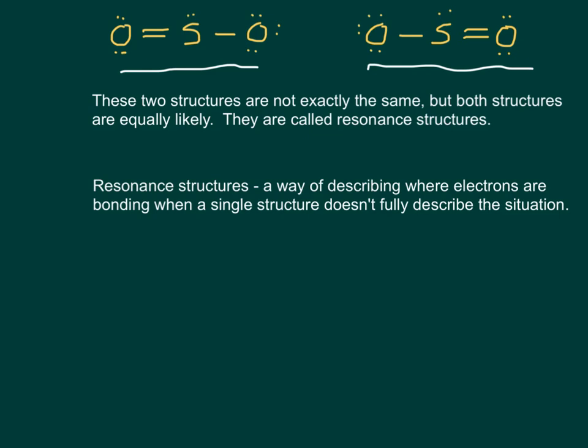These are called resonance structures. So this is when I move double bonds to different places to give me structures that are equally likely correct. It's a way of describing where the electrons are bonding when a single structure doesn't give the whole picture.